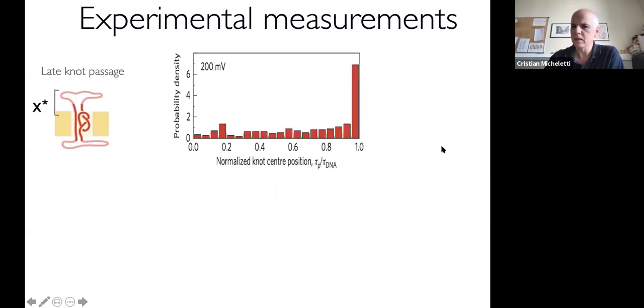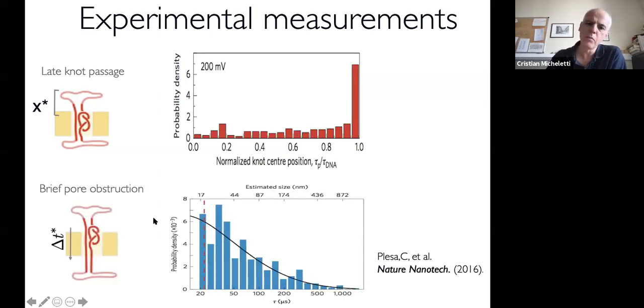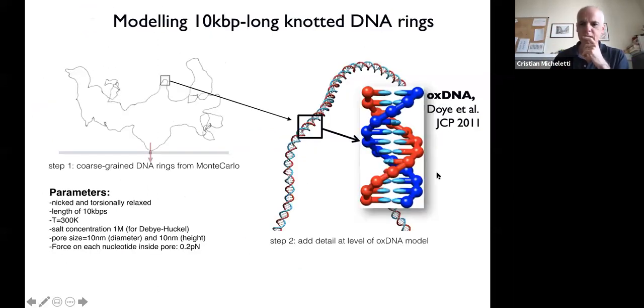That's an order of magnitude improvement, and I don't think that is really an upper limit. They saw interesting features, like the statistics of when you see the signals due to the knot is skewed towards the late passage. And most passage events are very short, so tight that the knot size would be tens of nanometers—much smaller than the persistence length of 50 nanometers.